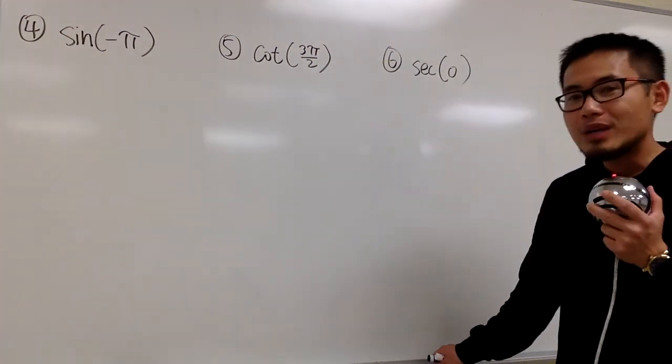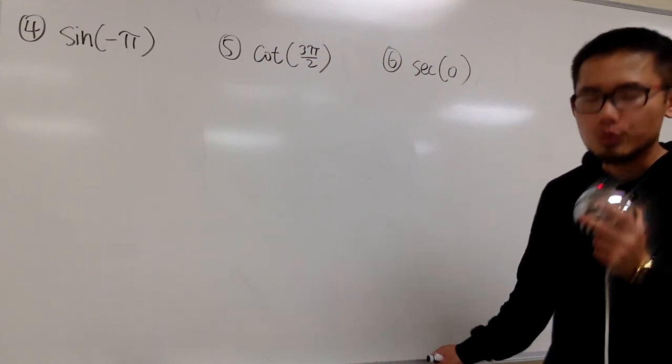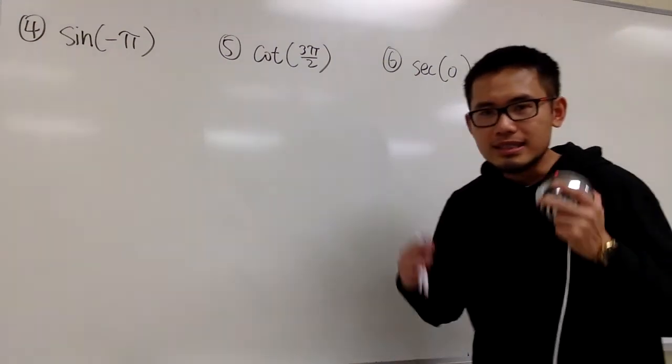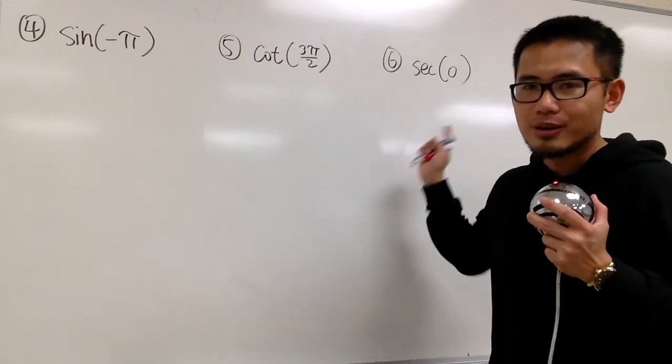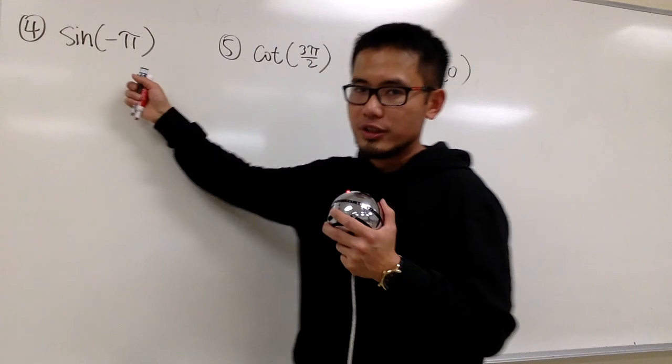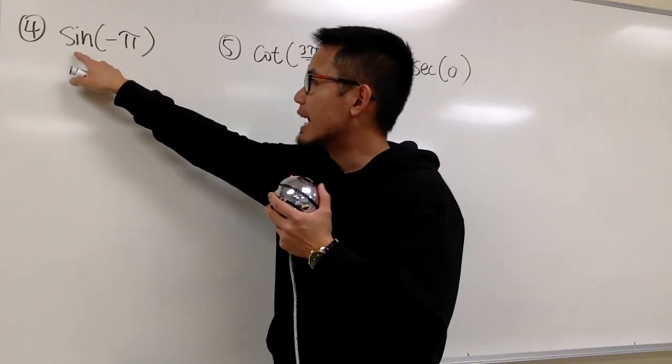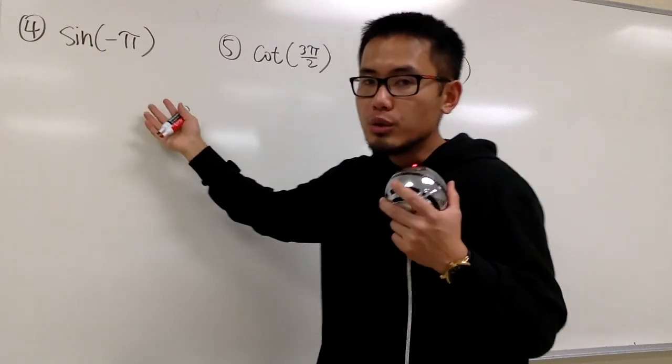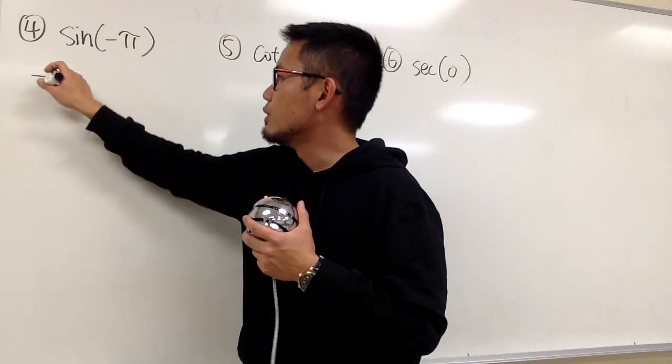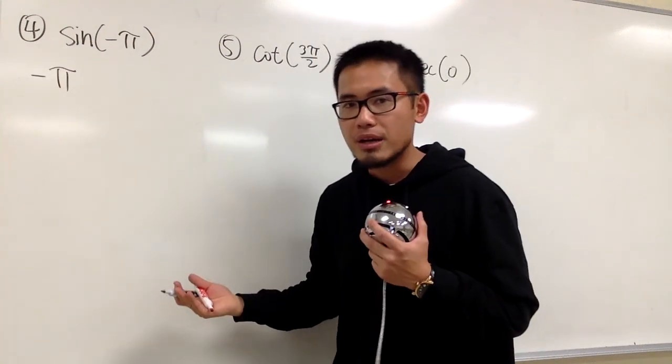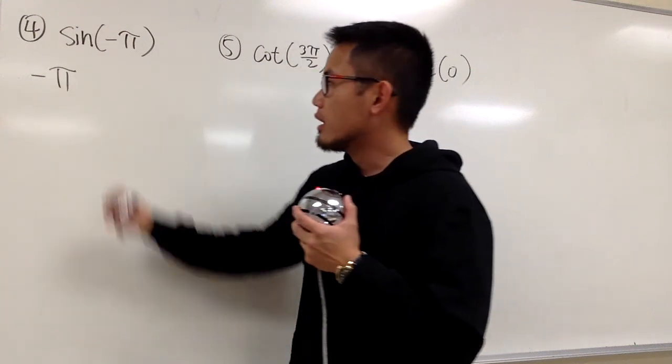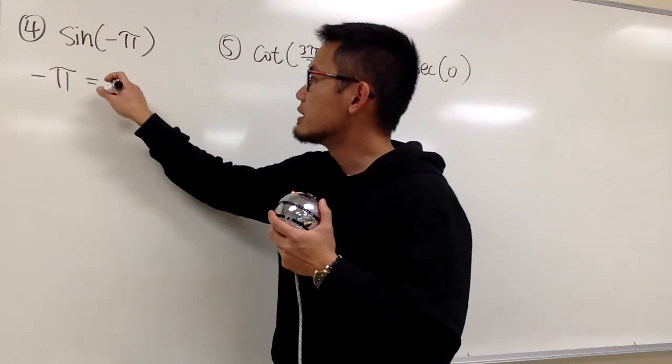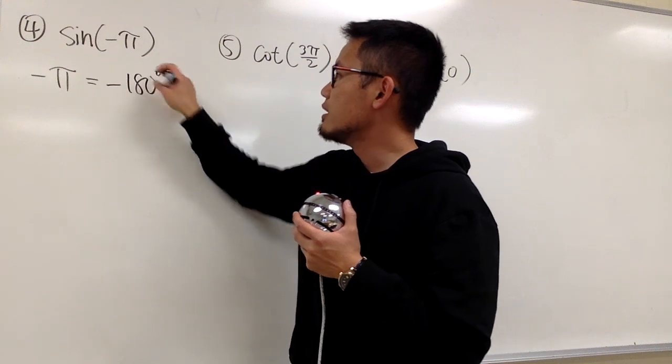So what we have to do is utilize the idea behind the unit circle, especially for the quadrantal angles like this. Let me show you with the first one. Here we have sine of negative pi. We know right away we have to convert this into degrees so we can understand better. We know pi is 180 degrees, therefore altogether this is negative 180 degrees.